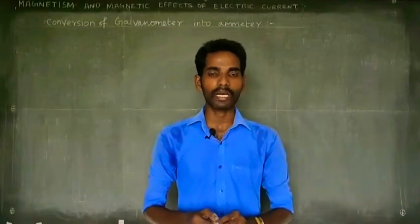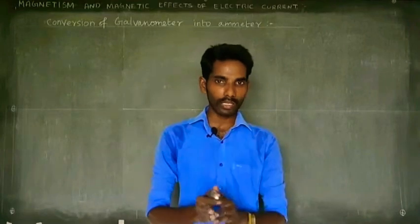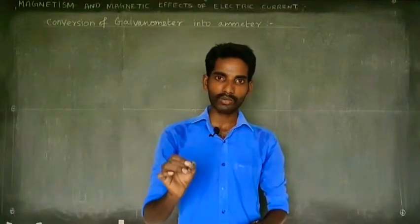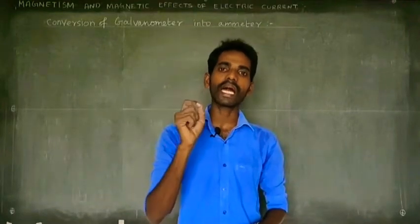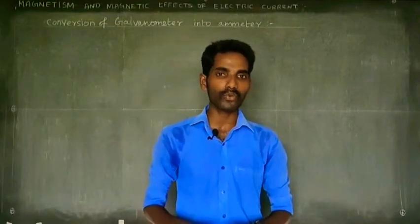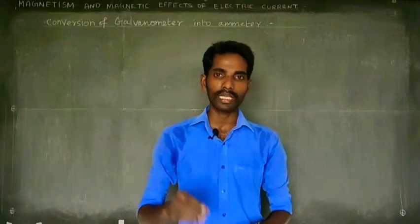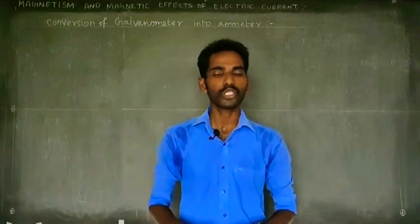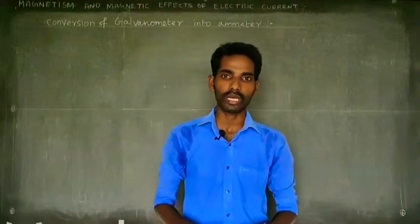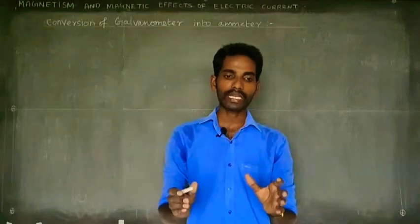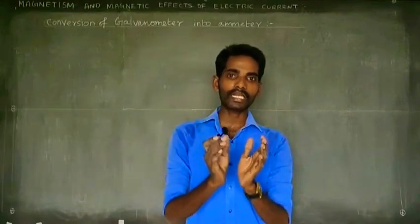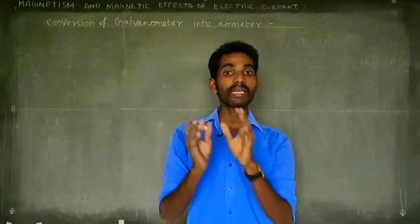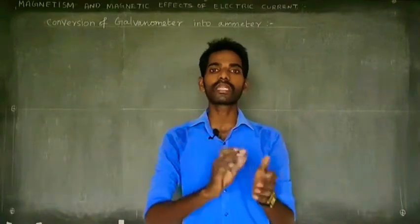Ammeter is used in an electrical circuit to measure how many amperes of current are flowing. We are going to talk about the ammeter and how we can convert it from a galvanometer.